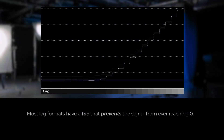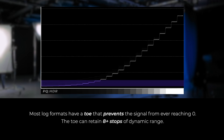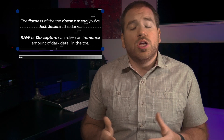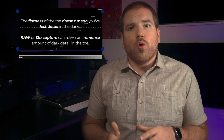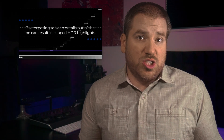Most log formats have a toe that prevents the signal from ever reaching zero, and you may be retaining eight or more stops of dynamic range below your midtones into that toe. That doesn't mean you've lost detail in the darks, especially if you're shooting in RAW, 12-bit ProRes 444, or 12-bit DNX HR 444. It's tempting to adjust your exposure upwards to get a more even distribution on the waveform, but that's not actually beneficial in HDR, since it usually results in clipped highlights.